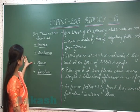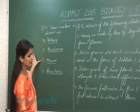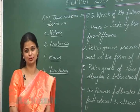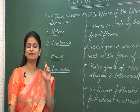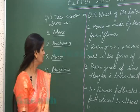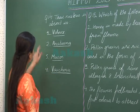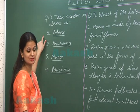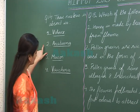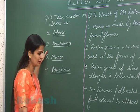Let's discuss question number 14. True nucleus is absent in prokaryotic organisms — they have a primitive nucleus known as a nucleoid. So we have to look for a prokaryotic organism. Volvox is green algae, Anabaena is blue-green algae and it is prokaryotic.